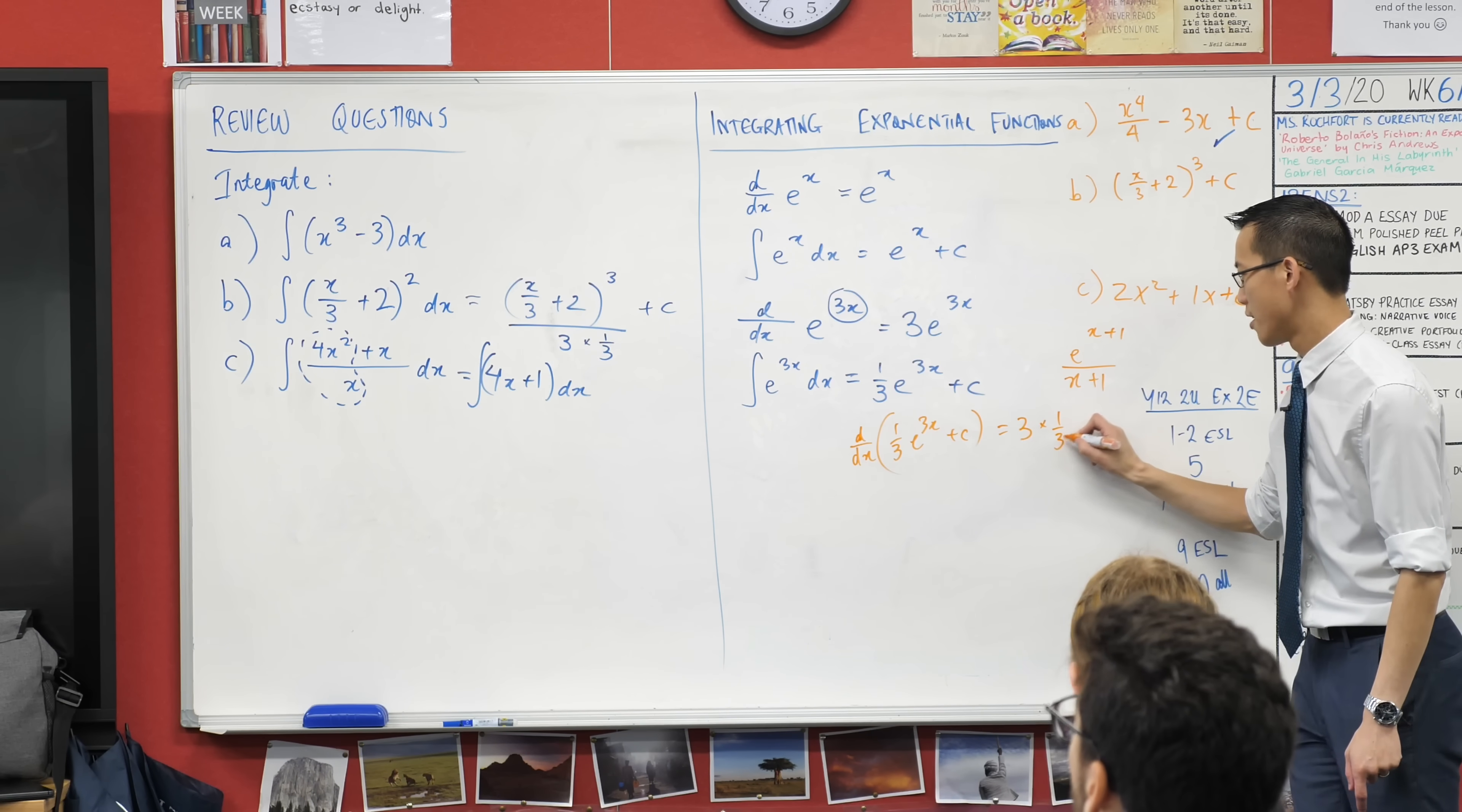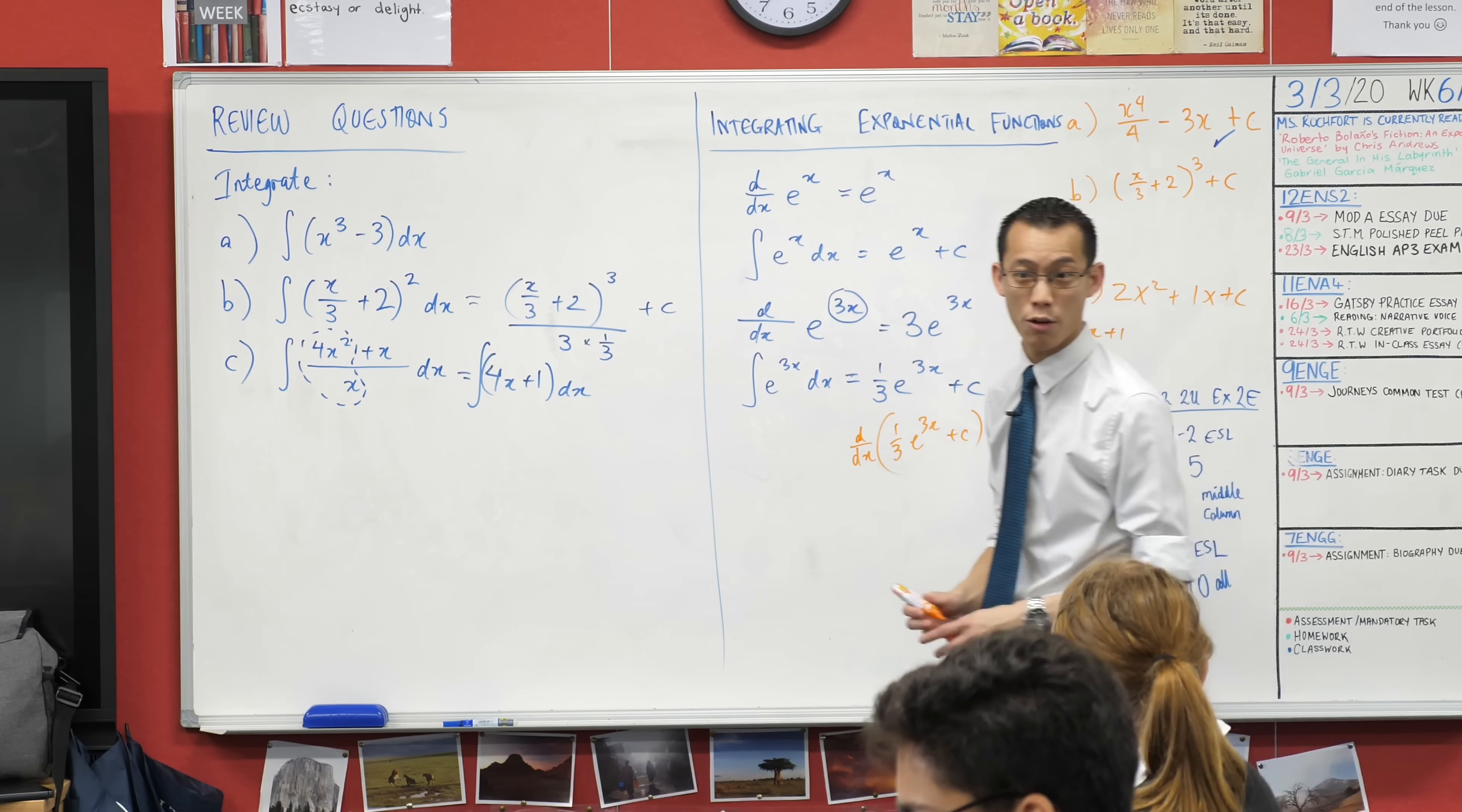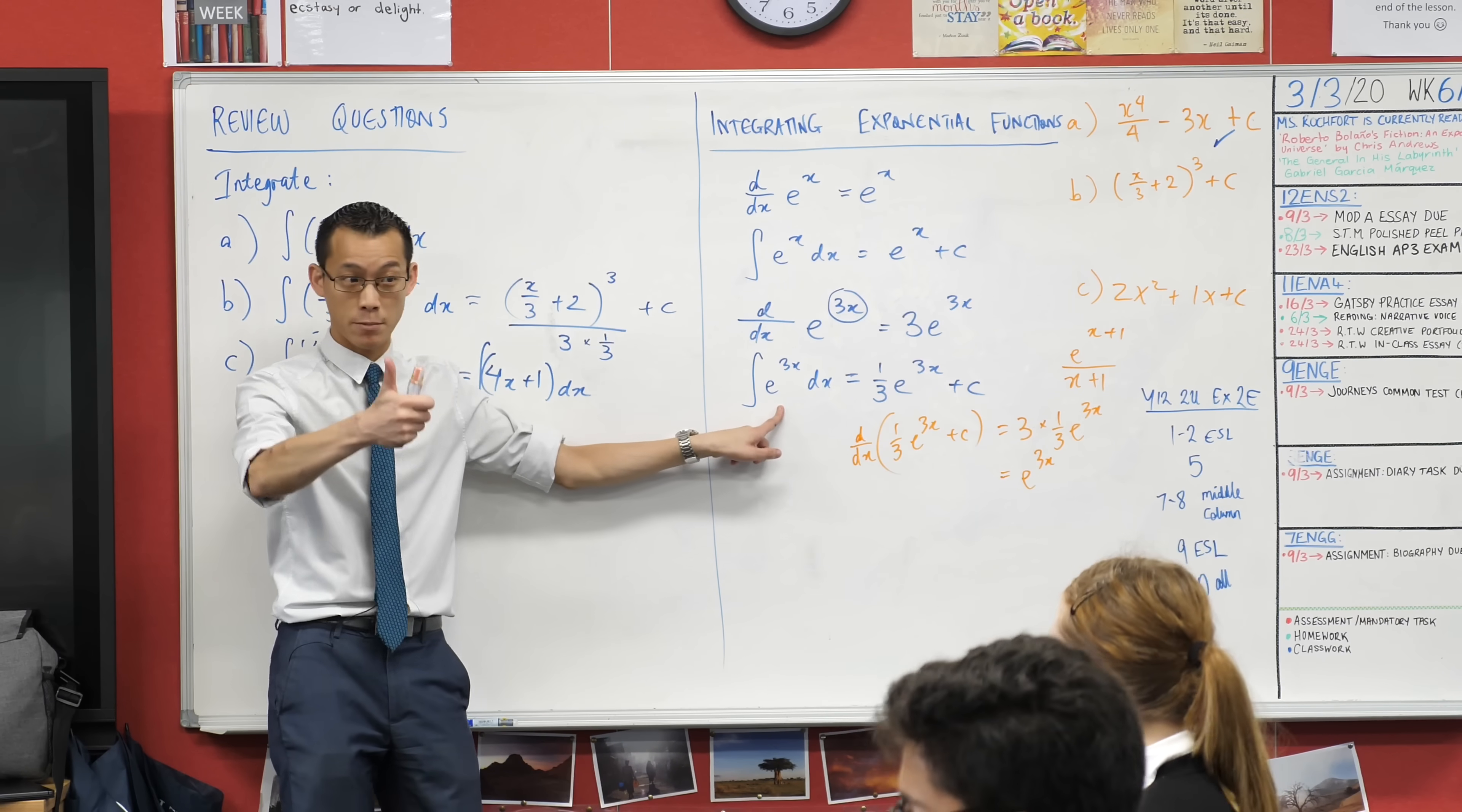The one third e to the 3x is still there. What happens to the plus c? It's gone. I can disregard it because it's constant. And there, thankfully, is what I was hoping for. This is just me proving to myself, oh yeah, I did get it right because this is what I was supposed to integrate.